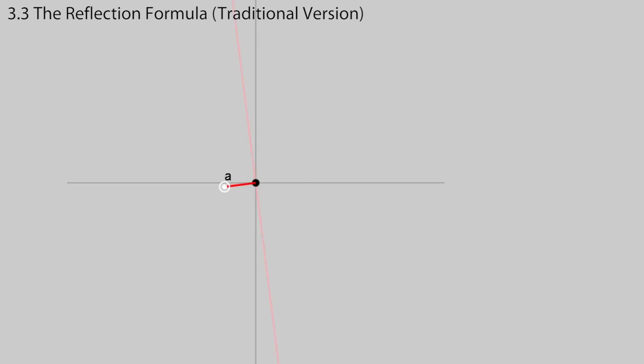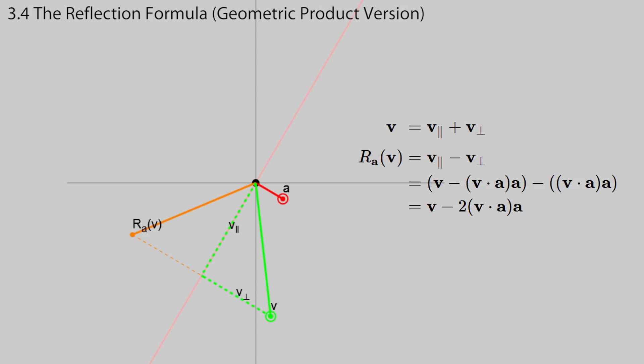If we have a unit vector a, and a vector v, we can reflect v by the plane perpendicular to a. This is done the usual way. We decompose v into a part perpendicular to the plane, and a part parallel to the plane. Then, to reflect the vector, flip the perpendicular part while keeping the parallel part unchanged. At this point, we can replace the dot product by its geometric product version to get the following.